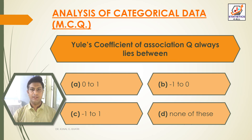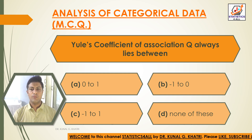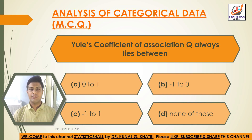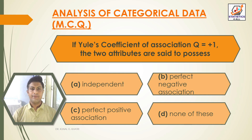Next question: Yule's coefficient of association Q always lies between — option A: 0 to 1, option B: −1 to 0, option C: −1 to 1, option D: none of these. The answer is option C — Q always lies between −1 to 1.